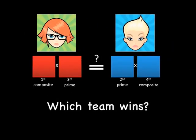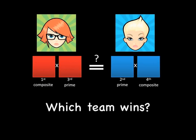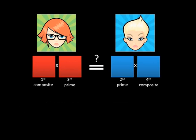After playing for some time, your class might conclude that the blue team is more likely to win than the red team. Their reasoning might go something like this: no matter what composite number the red team chooses — say 13 times 31 — blue can always choose a prime factor of it, for example 13. Red then chooses a prime number, and blue constructs a composite number using all the factors from the red side that haven't yet been used, in this case 31 and 2. That solves the equation.